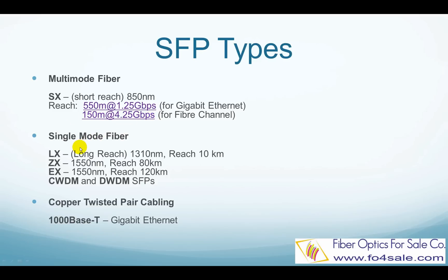On the single-mode fiber side, there are a lot of choices. I am listing the most common types here. LX modules use 1310 nanometer wavelength laser and support up to 10 kilometers. ZX modules use 1550 nanometer wavelength laser and support up to 80 kilometers. EX modules also use 1550 nanometer but support up to 120 kilometers reach. There are also CWDM and DWDM SFP modules, which use multiple wavelengths to support even more bandwidth and distance. MSA also defines an SFP module based on UTP twisted pair copper cable, but it supports only Gigabit Ethernet.